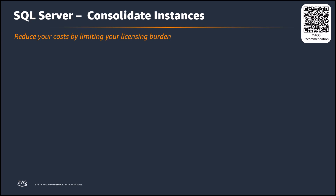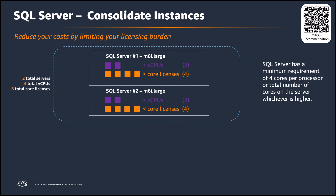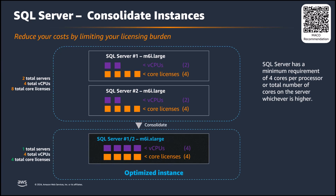Consolidating SQL Servers allows organizations to better utilize their purchased licensing and reduce overall licensing costs. By combining smaller servers into a single more powerful server, organizations can ensure they are making full use of the minimum required 4 core licenses. This consolidation not only eliminates the need for additional licenses but also maximizes the value of existing licenses. In this example, we combined two M6I large instances into one M6I extra large instance, eliminating the cost of one instance and reducing the licensing requirement by 50%, leading to significant cost savings.